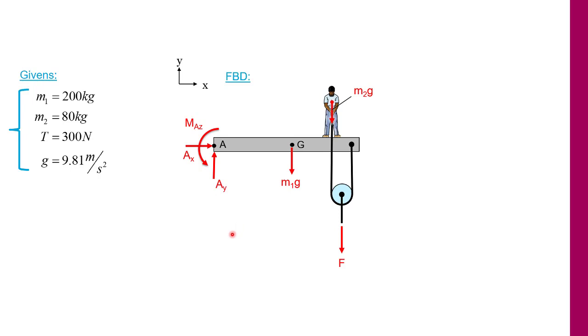Now if we look at this, we have Ax, Ay, Maz, and F as unknowns, because the tension and he's pulling on the rope with 300 newtons, F is not 300 newtons. So we have four unknowns but only three equations. So what can we do?